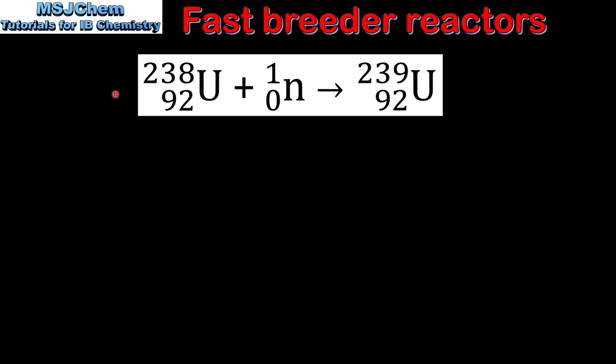The first nuclear reaction is neutron capture, in which the nucleus of an atom absorbs a neutron to form a heavier nucleus. In this reaction we have uranium-238 absorbing a neutron to form uranium-239.